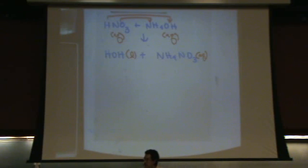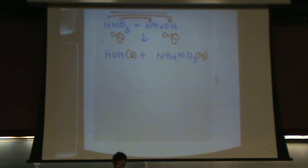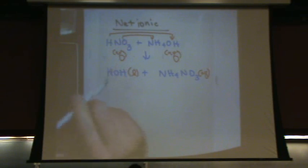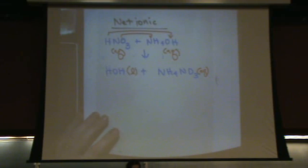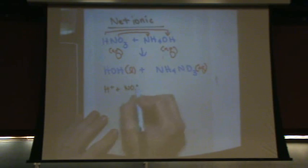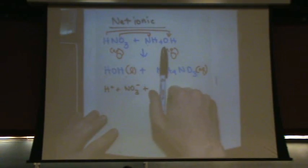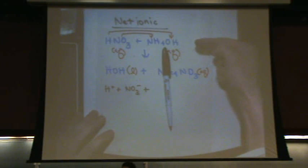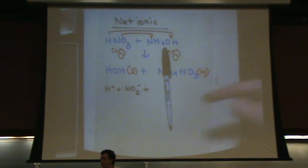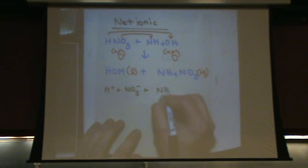Now let's write our net ionic equation. Anything that is aqueous and a strong electrolyte can be separated into ions. Is nitric acid a strong electrolyte? Yes — it's on the strong acid table. So I'll write it as H⁺ plus NO3⁻. How about ammonium hydroxide? It's a base because it has OH. Is it a strong base? No, it's not in that table in your text, so you cannot separate it.